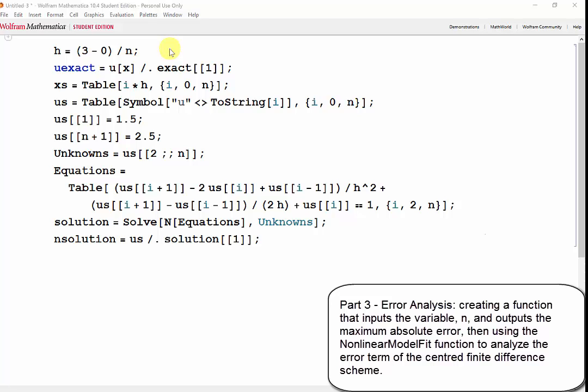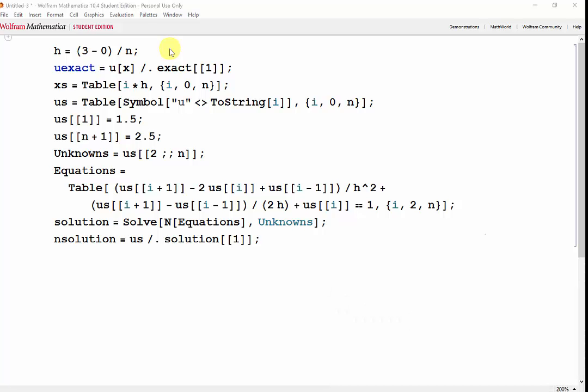In the last video, we programmed the finite difference method to find a numerical solution to our boundary value problem. Now, to analyze how the error changes according to the value of n that we choose, we'll create a function that outputs the maximum absolute error.